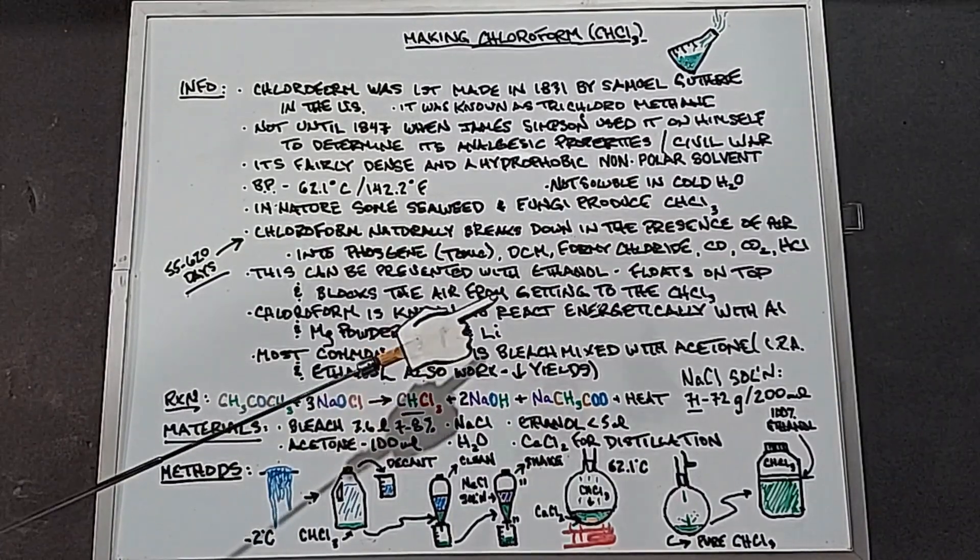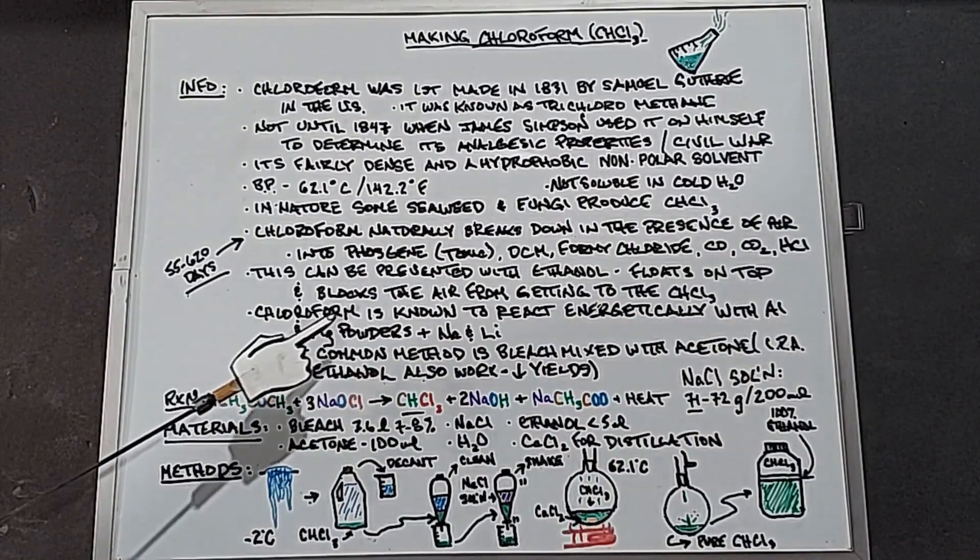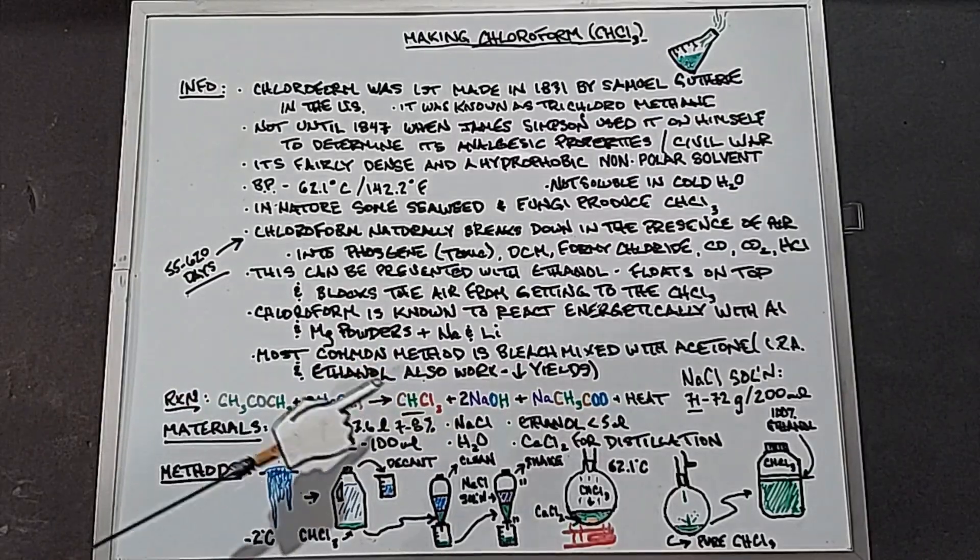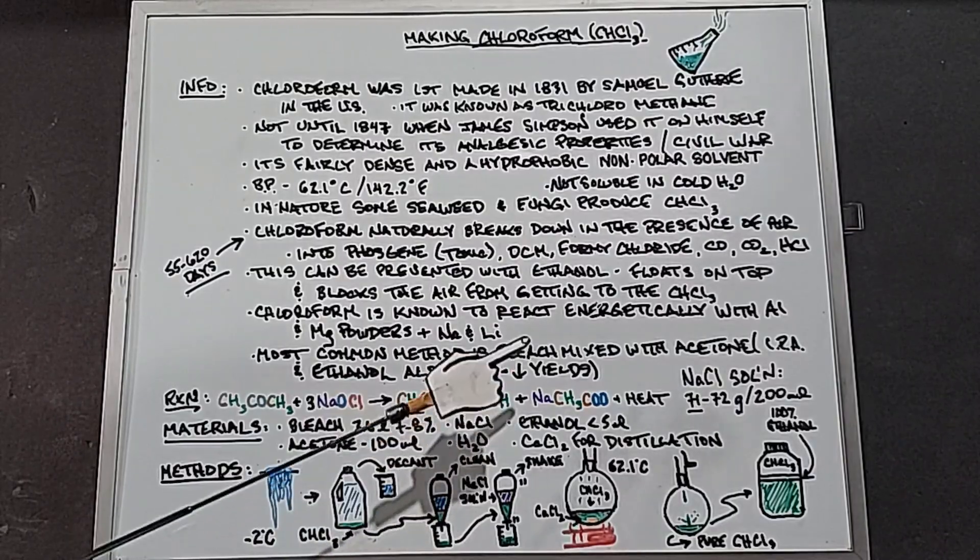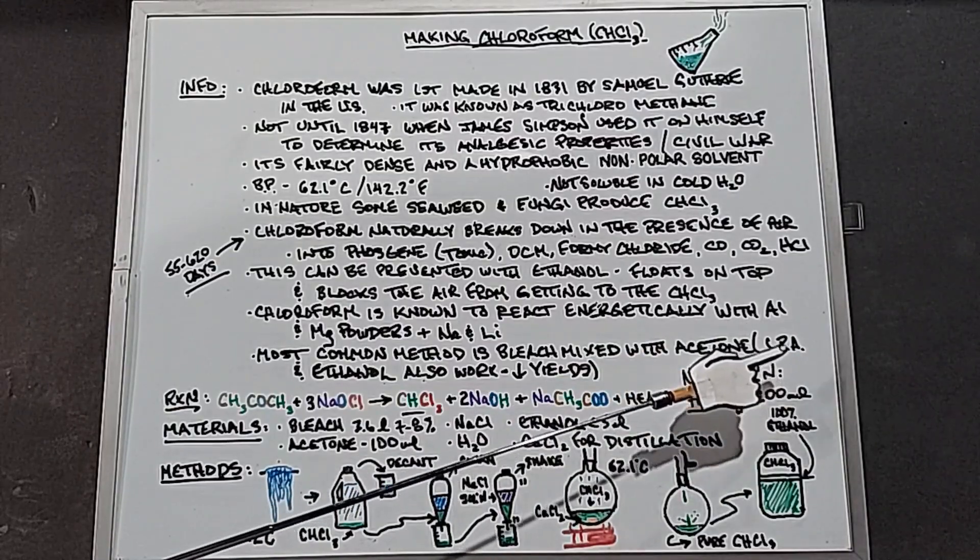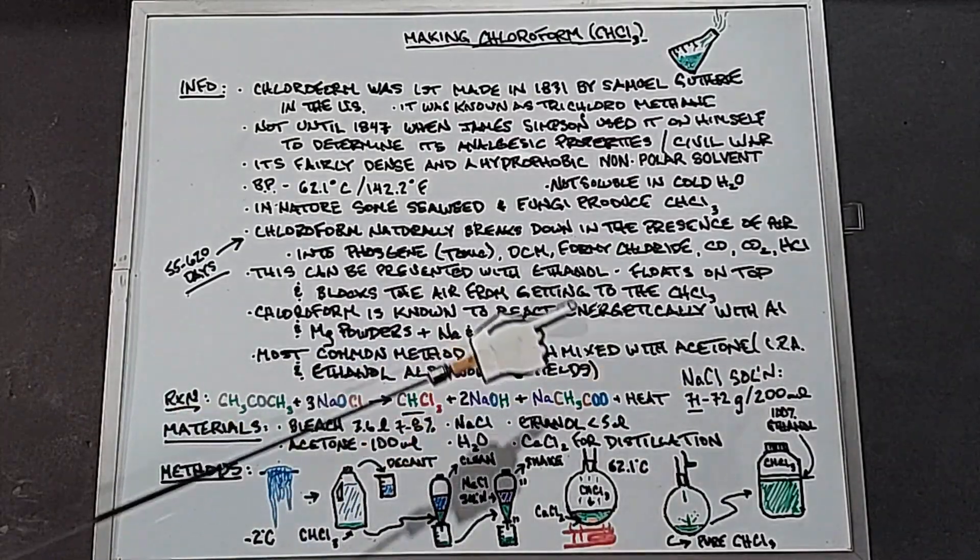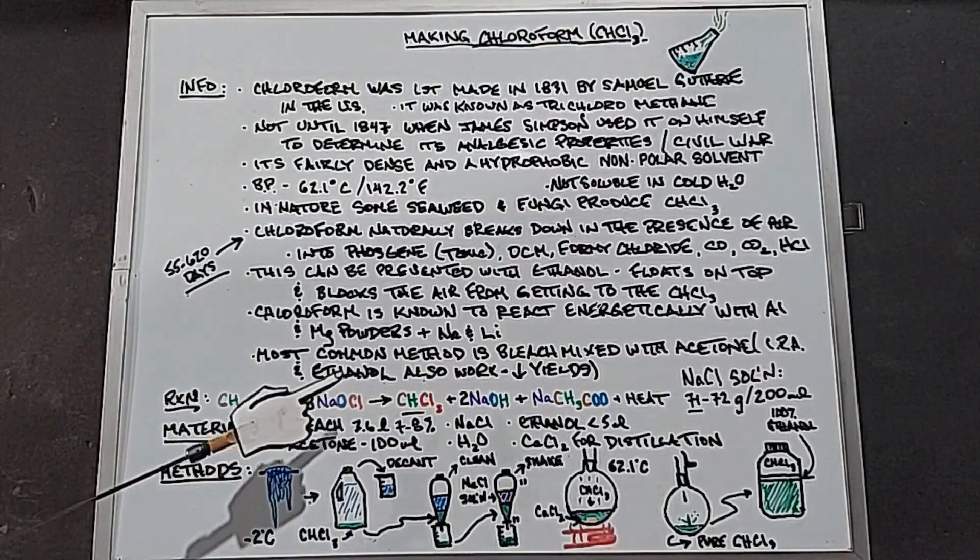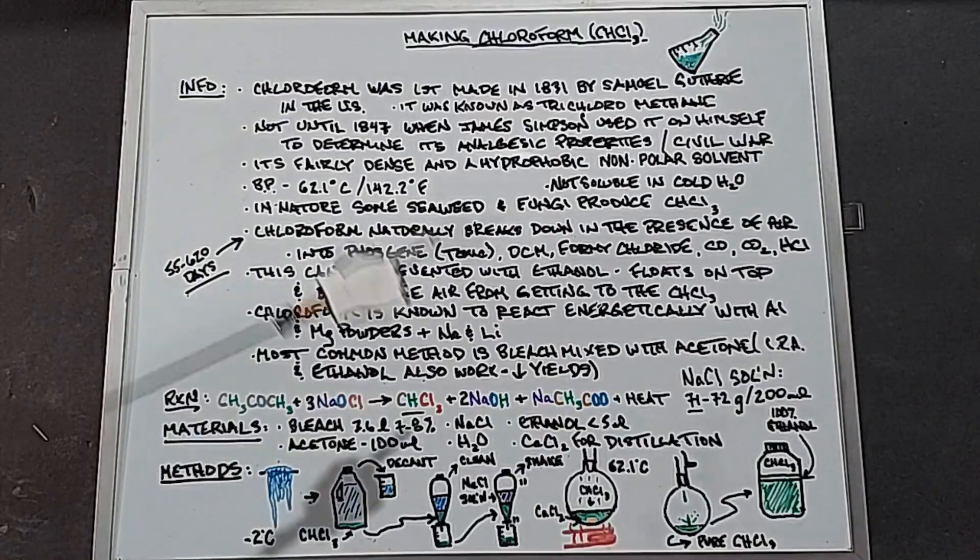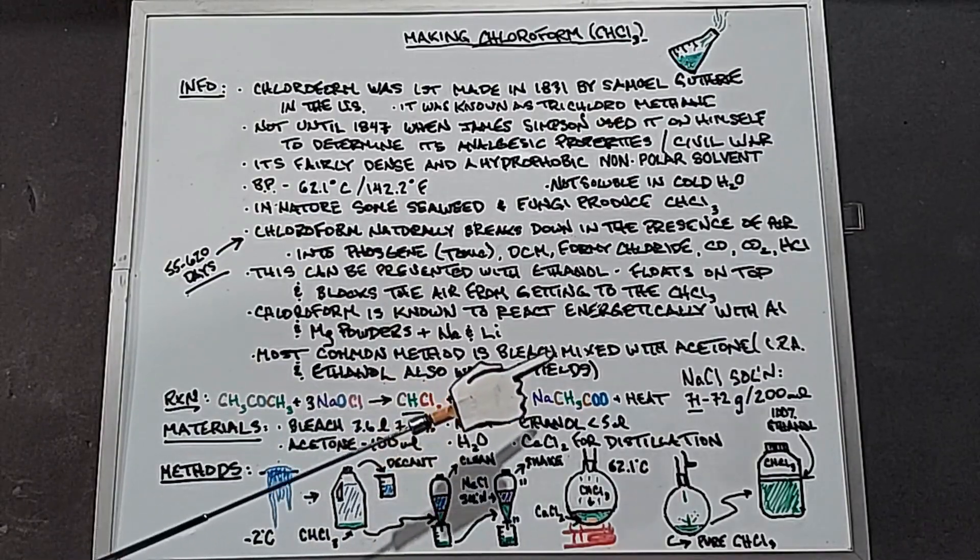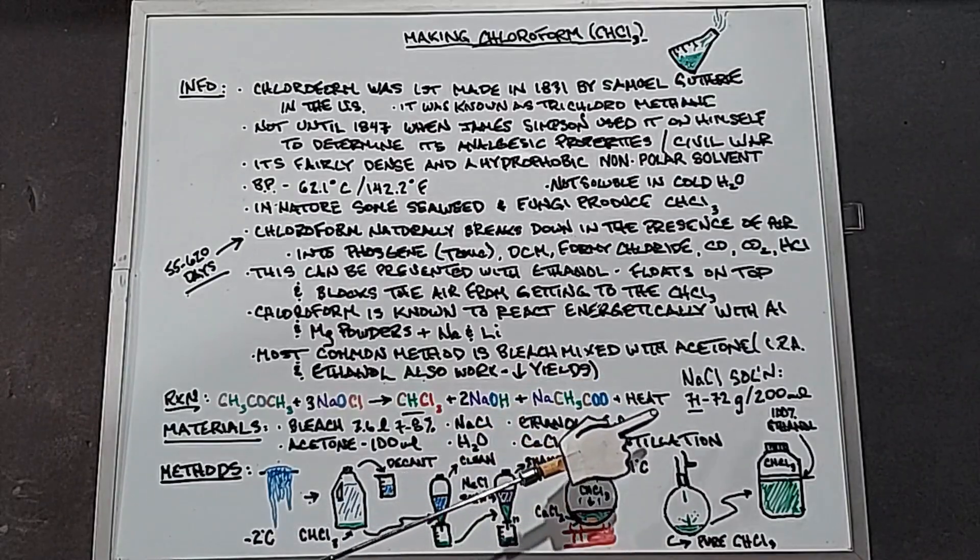It's known to react energetically with aluminum and magnesium powders. It also reacts with sodium and lithium. The most common method to make chloroform, especially DIY, is bleach mixed with acetone, but isopropyl alcohol and ethanol also work. Our reaction is as follows: acetone mixed with bleach sodium hypochlorite yields chloroform CHCl3 and sodium hydroxide and sodium acetate and quite a bit of heat because it's exothermic.